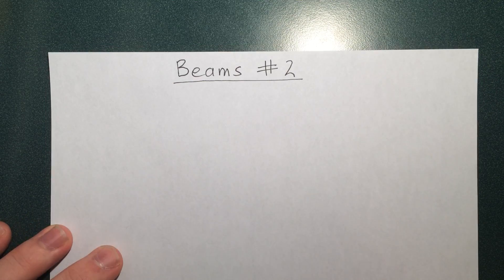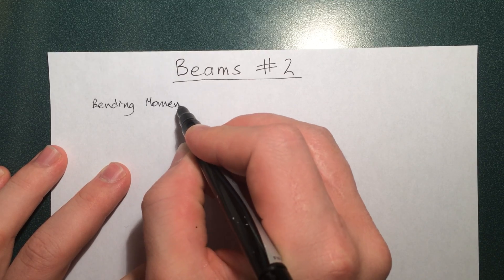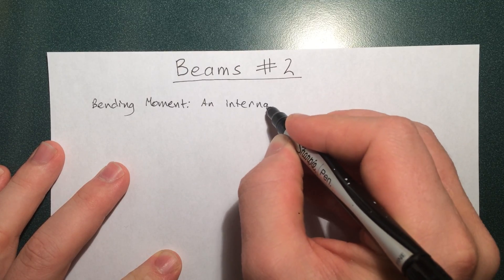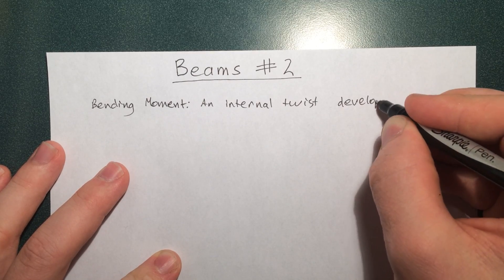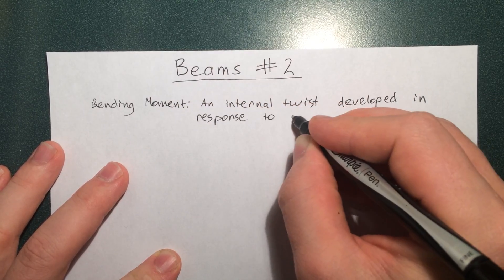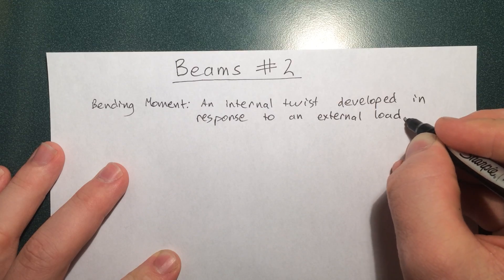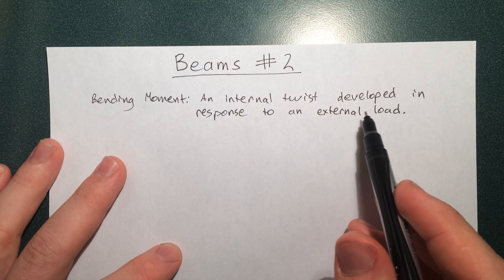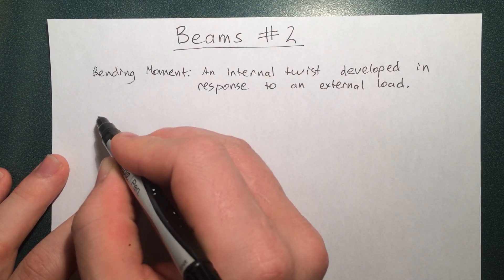So let's start with the definitions. A bending moment is an internal twist developed in response to an external load. So I'll show you what that is in an example after I give you the definition of shear.